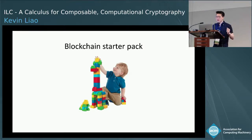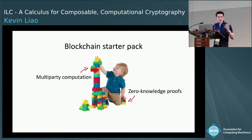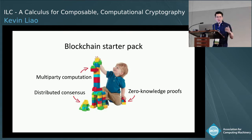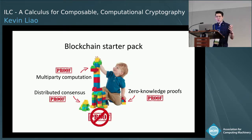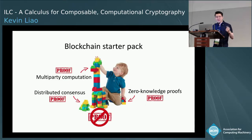They combine things like multi-party computation, zero-knowledge proofs, and distributed consensus. Even proving security for one of these components is non-trivial, and even if we're able to do that, it doesn't mean that when we combine them into a larger protocol it stays secure. Cryptographers have long recognized secure composition as a really difficult problem, and bad interactions can arise out of otherwise secure components.